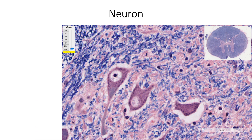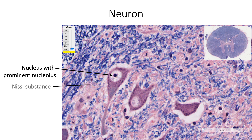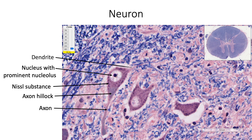Here we are seeing a cell body or perikaryon of a neuron showing a vesicular nucleus with a prominent nucleolus. The cytoplasm is showing prominent Nissl substance made of rough endoplasmic reticulum. The axon hillock with sparse Nissl granules marks the site of beginning of the axon. You are also able to see a dendritic process at the opposite pole of the neuron.